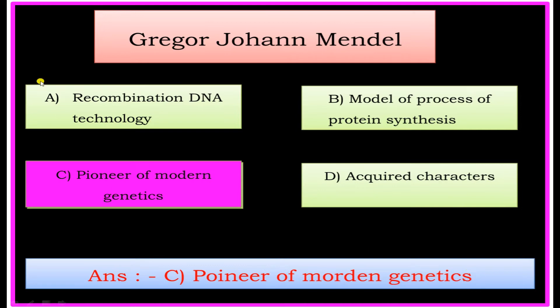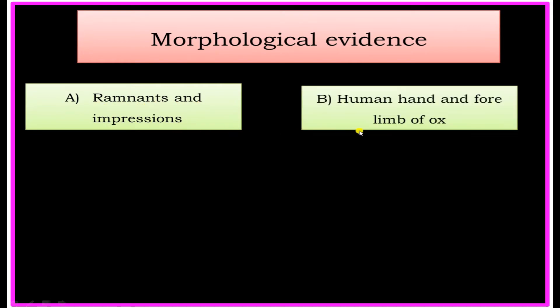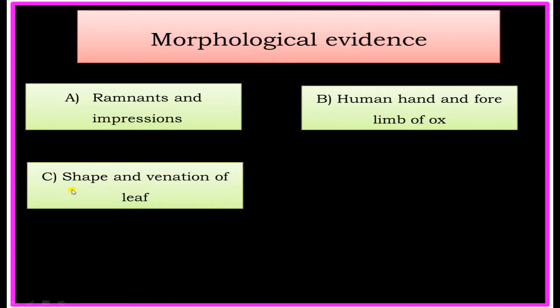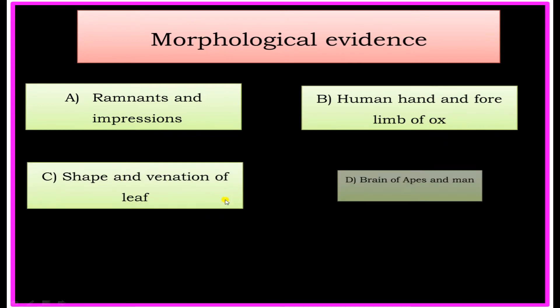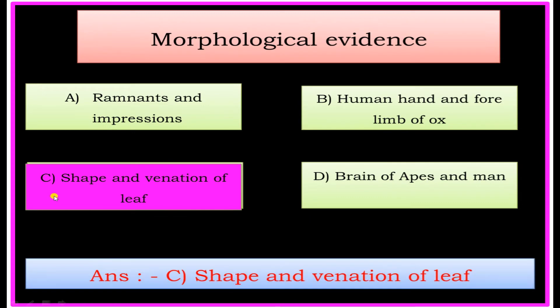Morphological Evidence. Options: A) Remnants and Impressions, B) Human Hand and Forelimbs of Ox, C) Shapes and Venations of Leaves, D) Brain of Apes and Man. The answer is: Shapes and Venations of Leaves.